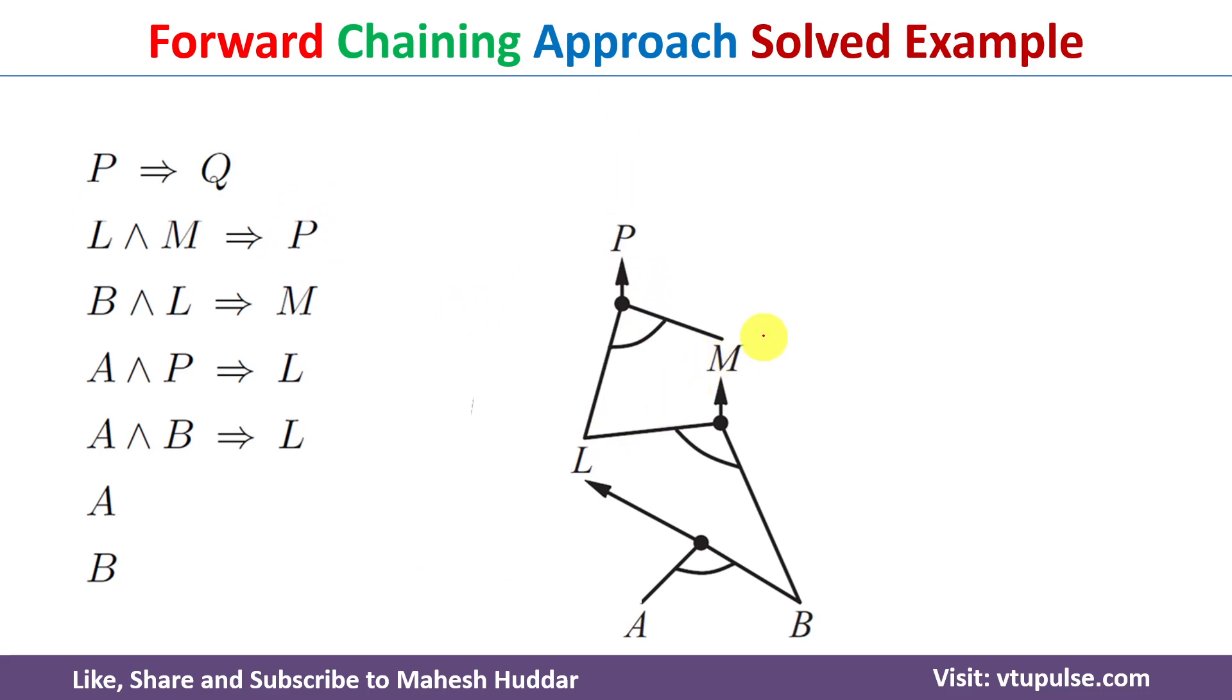L is true, M is true. L and M implies P, that P is also true over here. Because P is true, what we can do is we will check this rule. Because P is true, Q must be true.